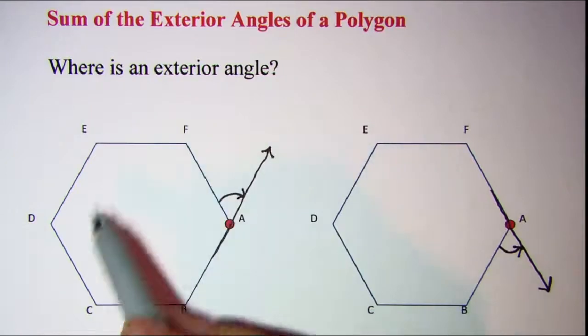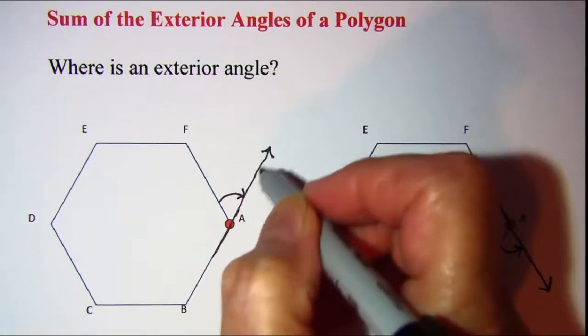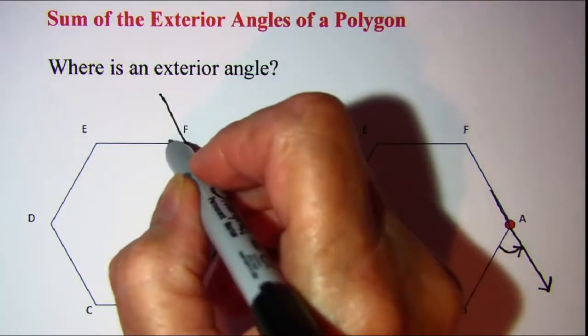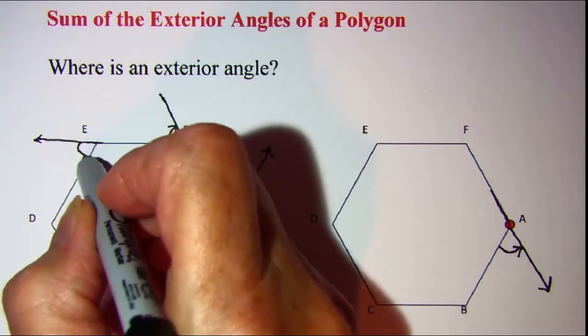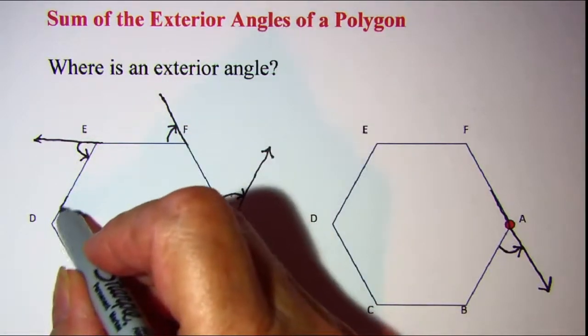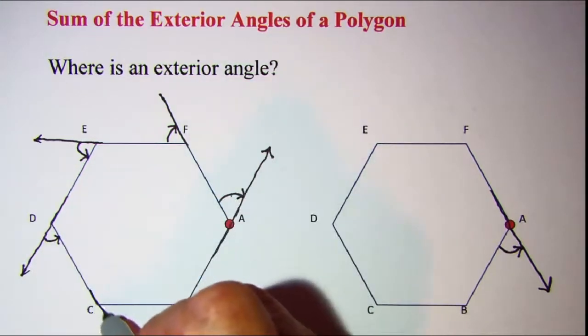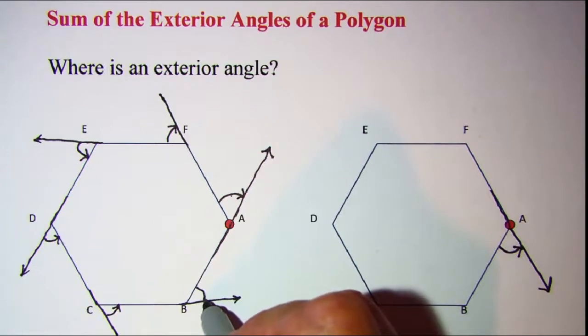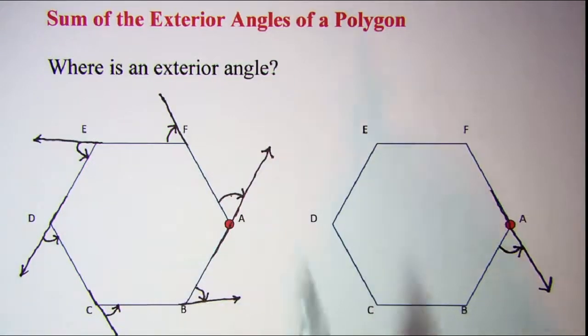So the exterior angles of a polygon, let's just look at all of them for this hexagon. If we extended at vertex A, here's our exterior angle. If we extend at vertex F, our exterior angle is here. If we extend at vertex E, our exterior angle is here. If we extend at vertex D, our exterior angle is here. And if we extend at vertex B, our exterior angle is here. So the sum of all six exterior angles is what we're going to be looking for.